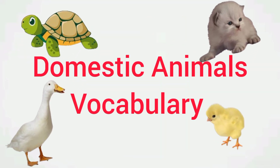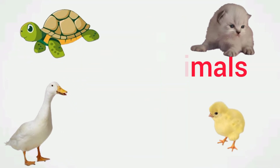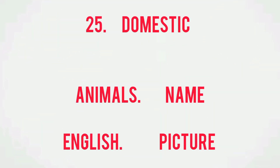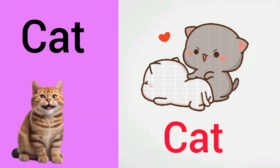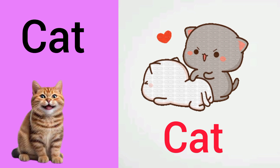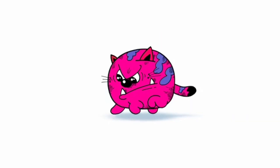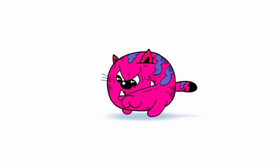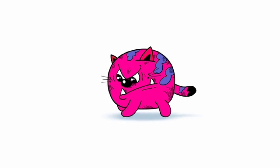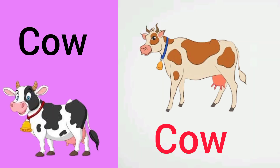Domestic Animals Vocabulary: 25 Domestic Animals Names in English with Pictures. Cat — Cat means Billy. Say with me: Cat.